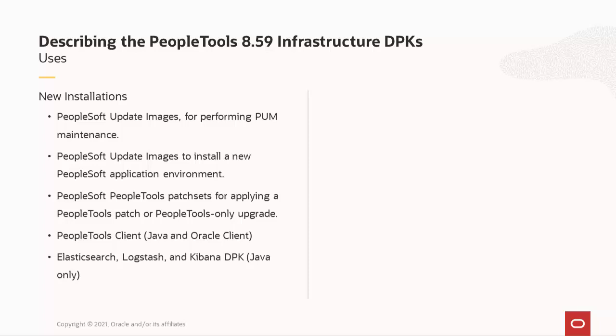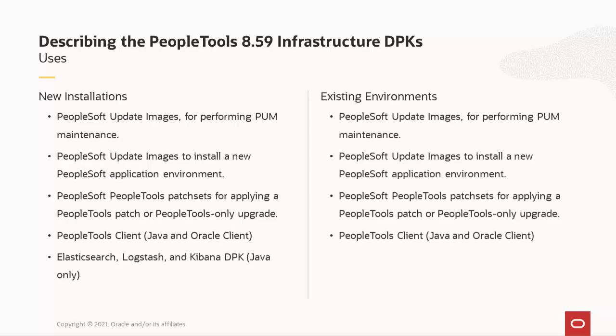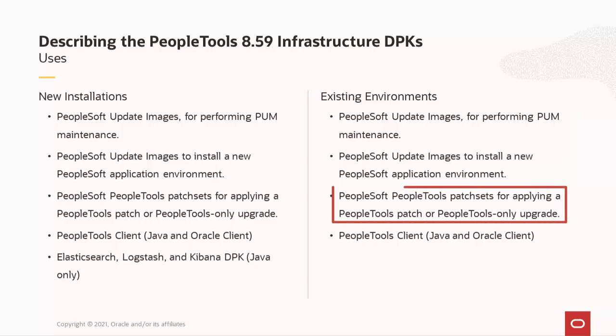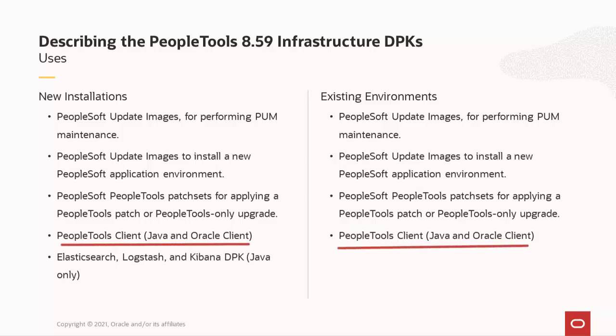You can use the PT-ENFR DPKs in two ways. As in the last release, use the DPK set to include updated software in a new installation. And now you can also apply CPUs to the software components on an existing environment, including update images for application environments, PeopleTools patches or PeopleTools-only upgrades, and PeopleTools client. When you use the PT-ENFR DPK set for a new or existing PeopleTools client environment, it updates the Oracle database client and Oracle Java 11. When used for a new Elasticsearch installation, it updates only Oracle Java 11.